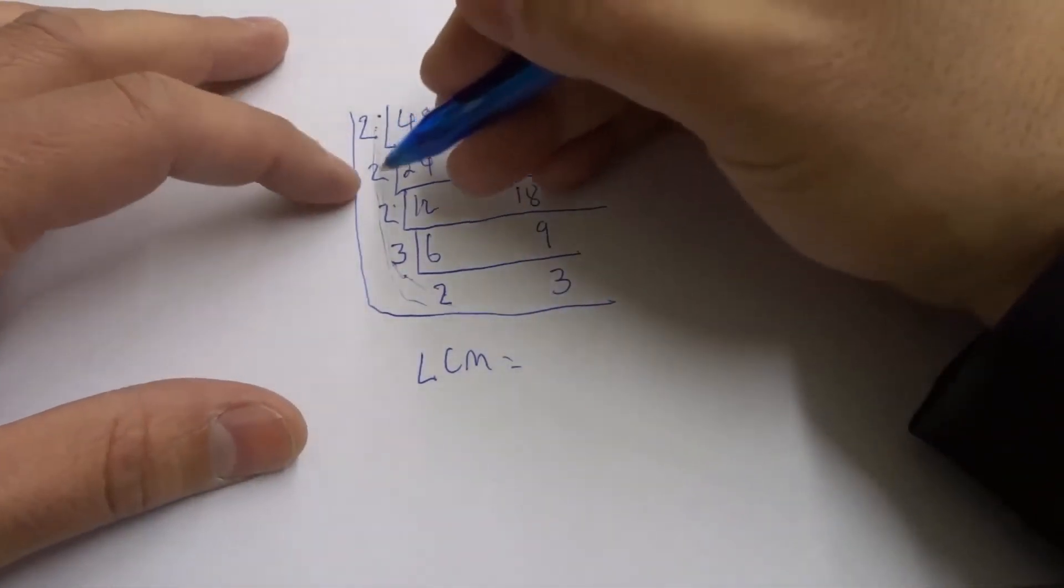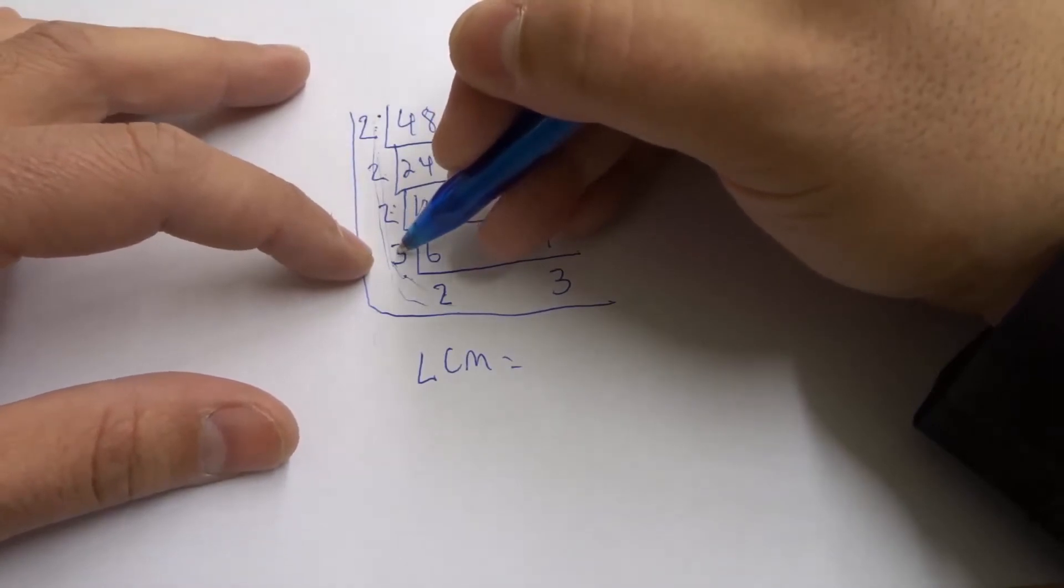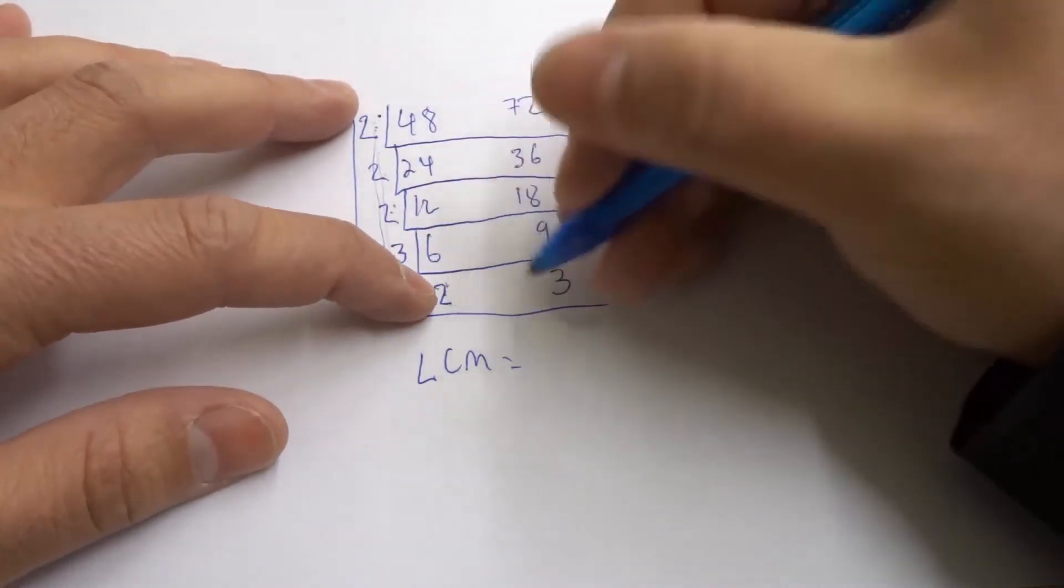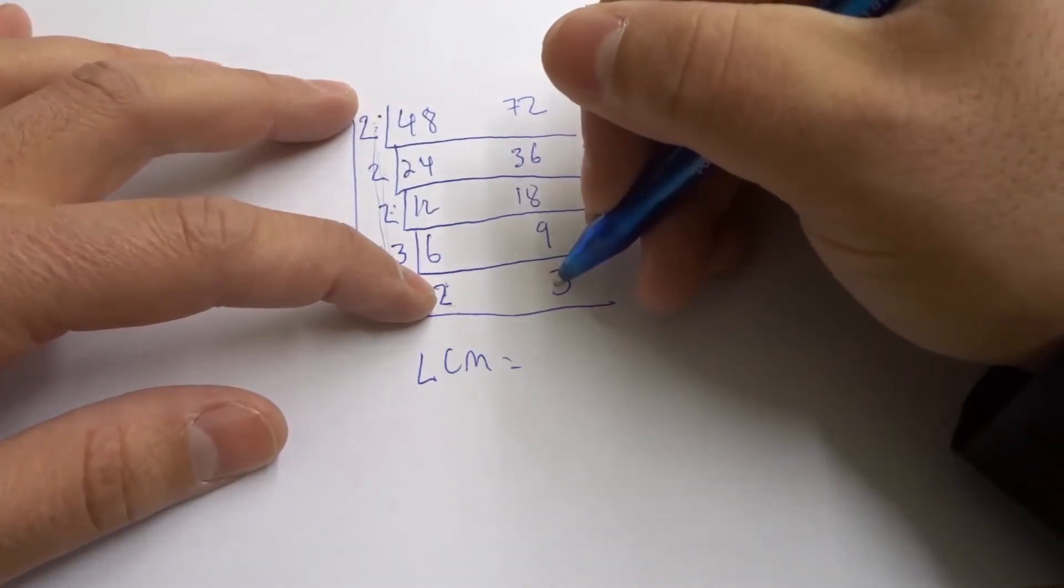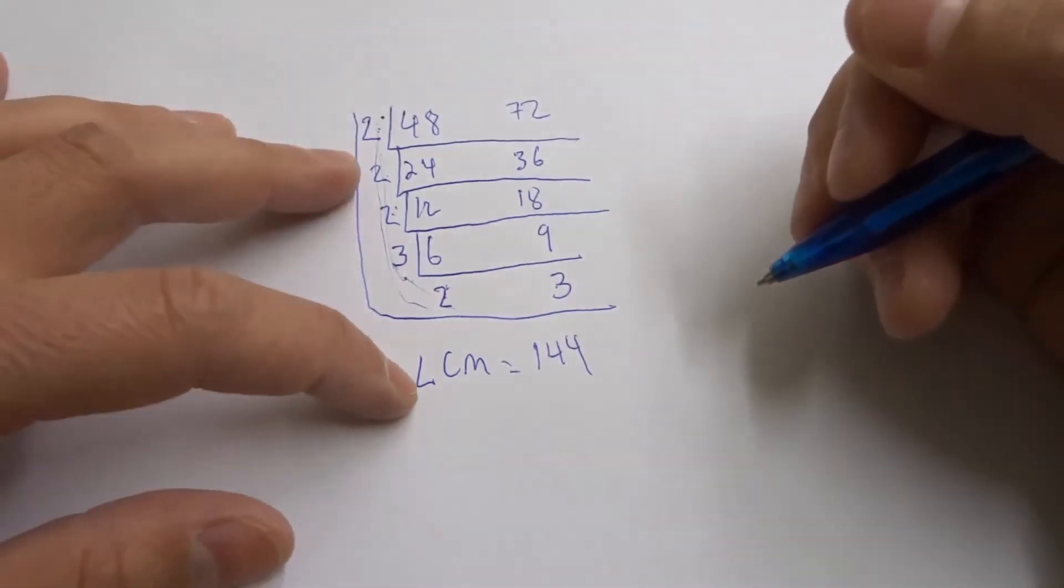So let's do it. 2 times 2 is 4 times 2 is 8 times 3 is 24 times 2 is 48 times 3. 48 times 3 is 144. That's our LCM. 144.